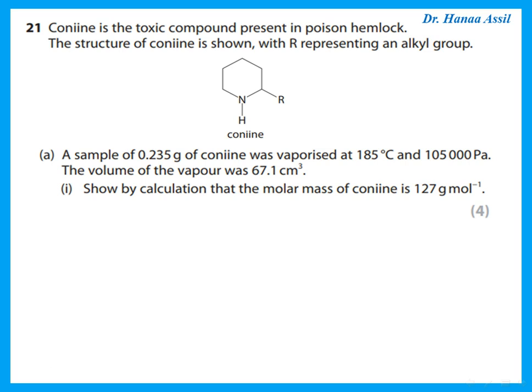Conine is the toxic compound in poisonous hemlock. A sample of 0.235 g of conine was vaporized, and we need to show that the molar mass is approximately 127 g mol⁻¹. Using the ideal gas law PV = nRT, where n = mass/M, we rearrange to find M = mRT/PV. Temperature must be in Kelvin (add 273) and volume in m³ (divide cm³ by 10⁶). Substituting gives M ≈ 127 g mol⁻¹.